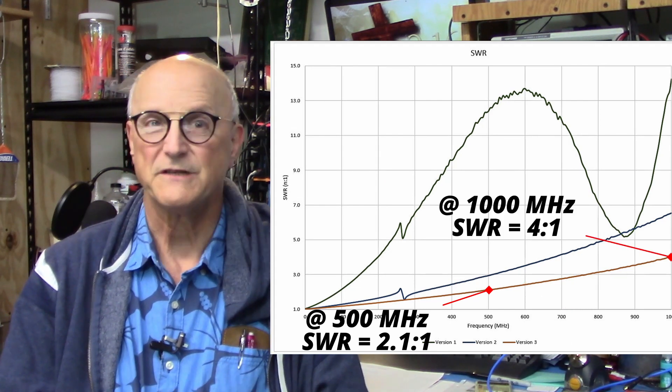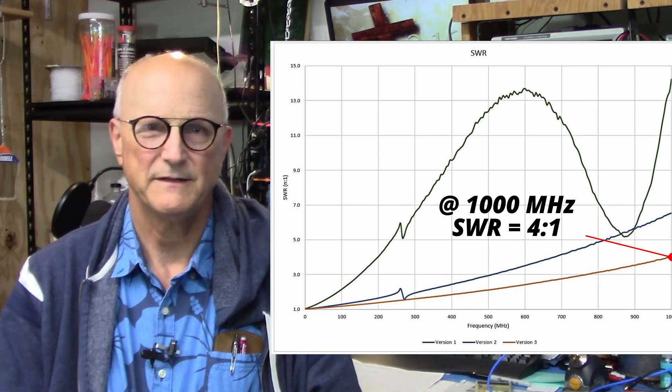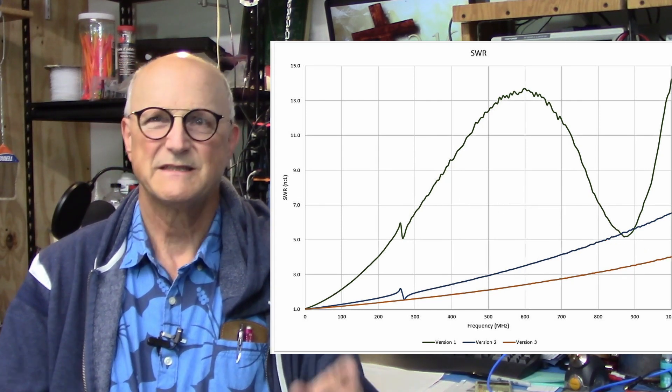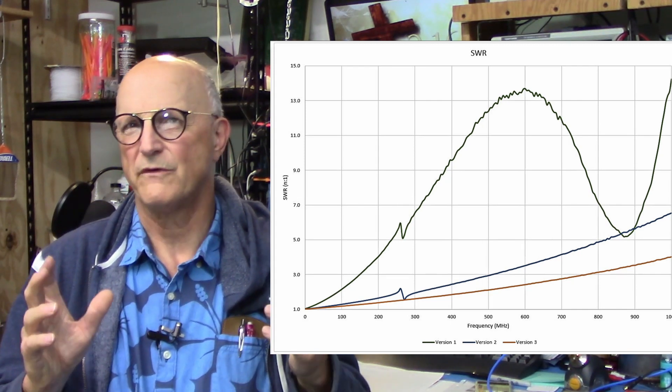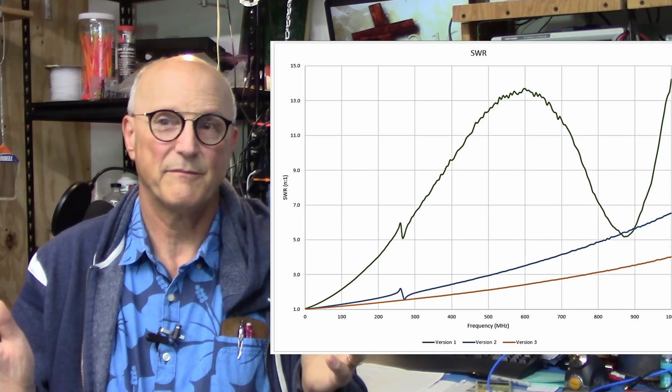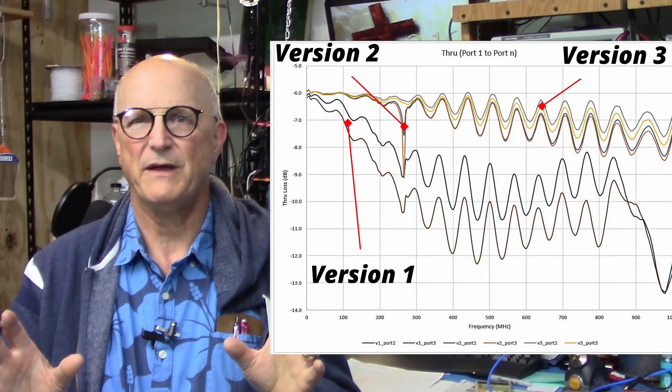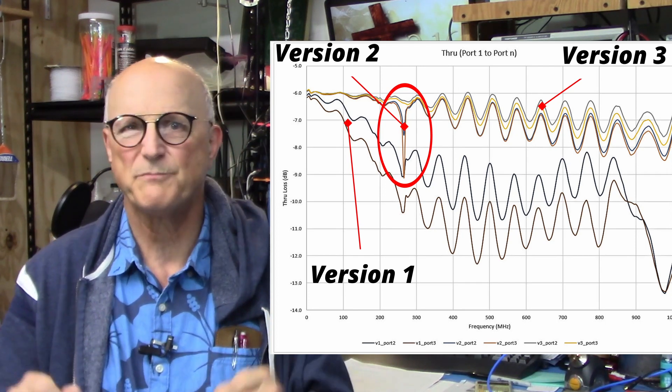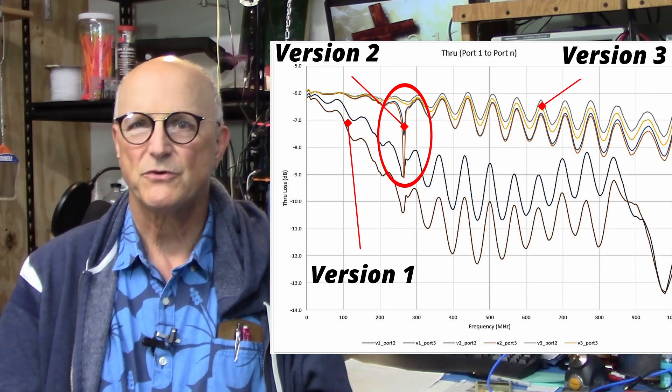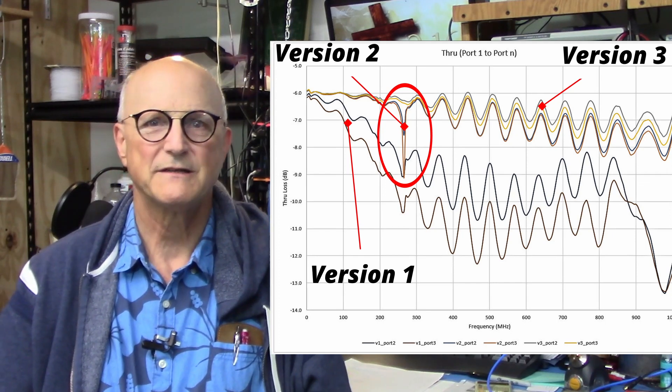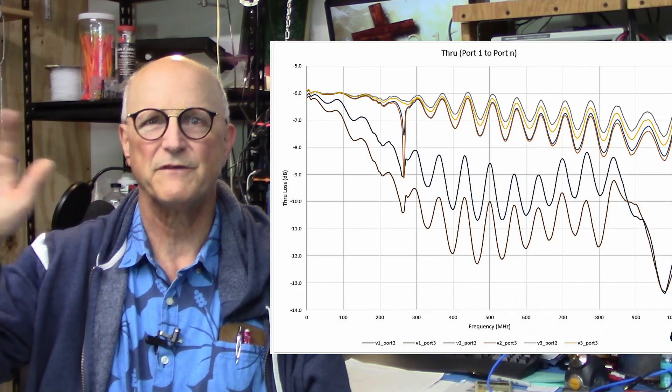And at 1 gigahertz, it's 4 to 1, while version 2 was 6.5 to 1. But this is still not acceptable to me. Now, while we saw significant improvement over version 2 in the SWR performance, the through performance is not significantly better, except that we've eliminated the downward spike at around 265 megahertz. By shortening the leads, I reduced the inductance enough so that the resonance was probably moved up beyond the limits of our scan.